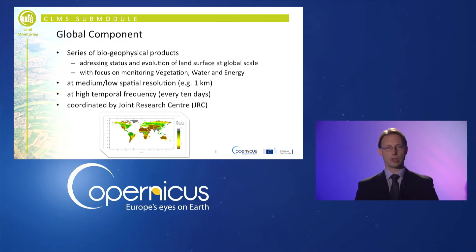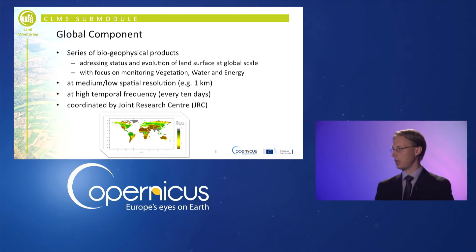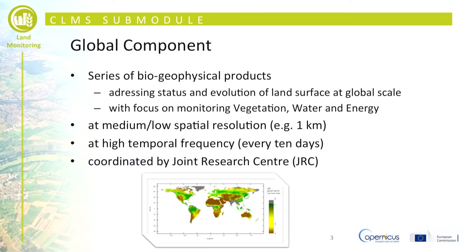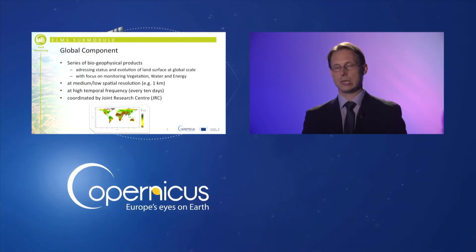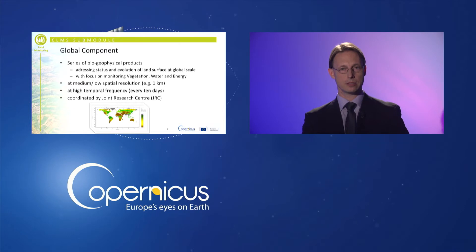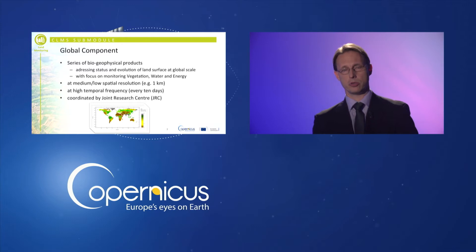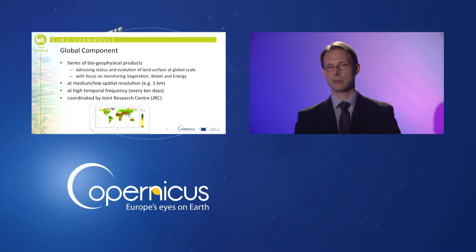The global component, as the name suggests, is a global set of products that addresses a range of biogeophysical parameters, monitoring the status and evolution of the Earth's surface under various aspects — vegetation characteristics, water aspects, and energy flux aspects. This is typically at a medium to low spatial resolution, ranging from one kilometer pixel resolution down to 100 meters.